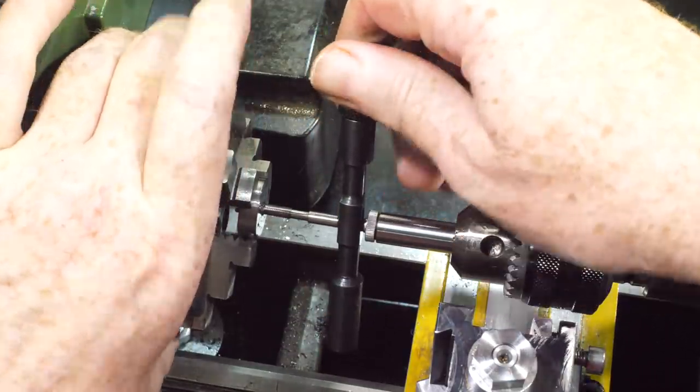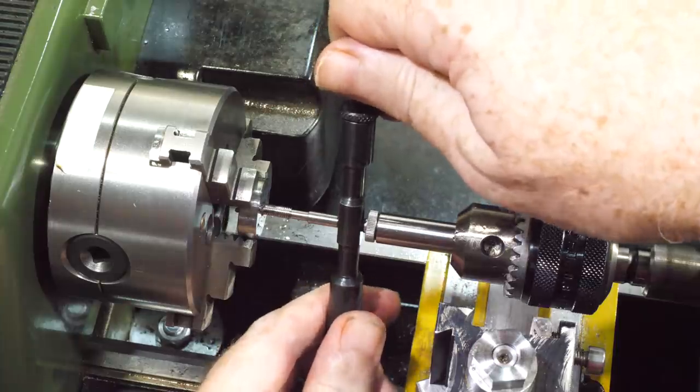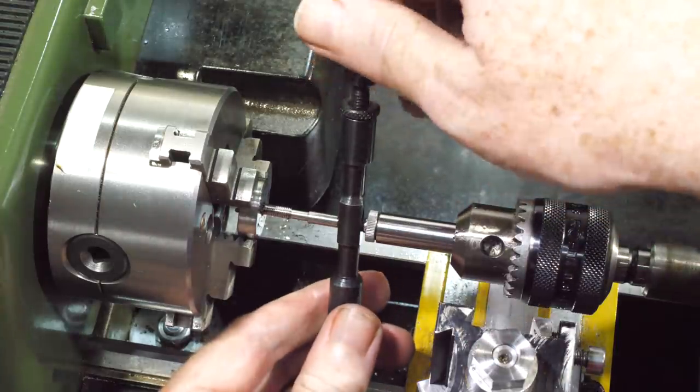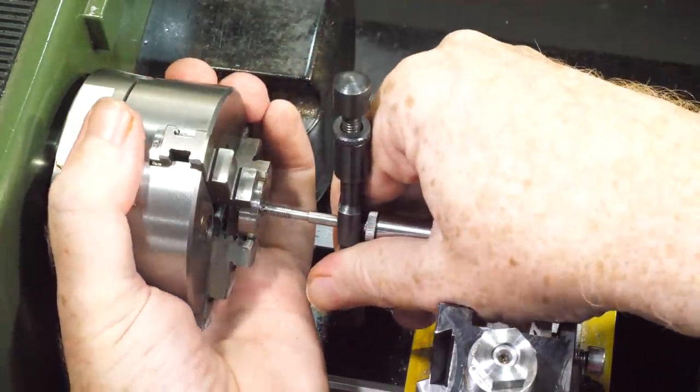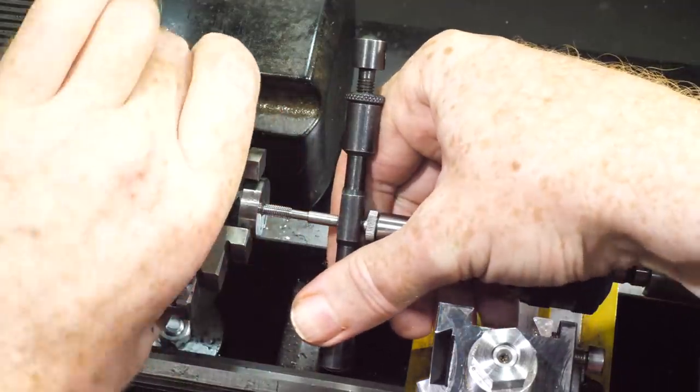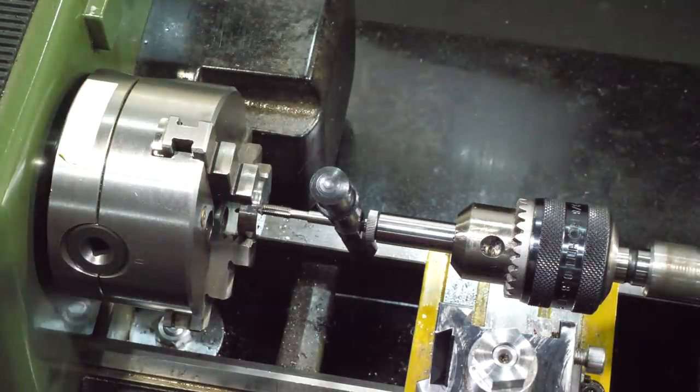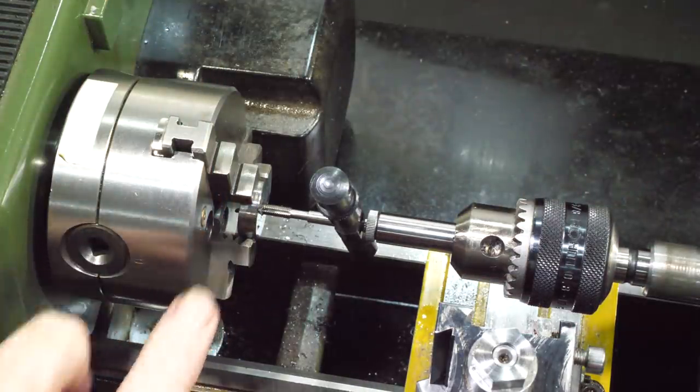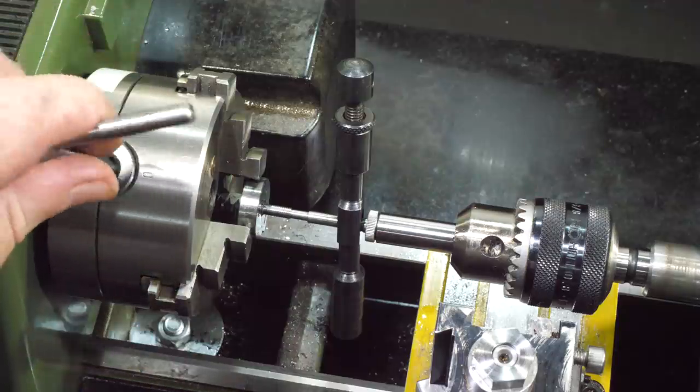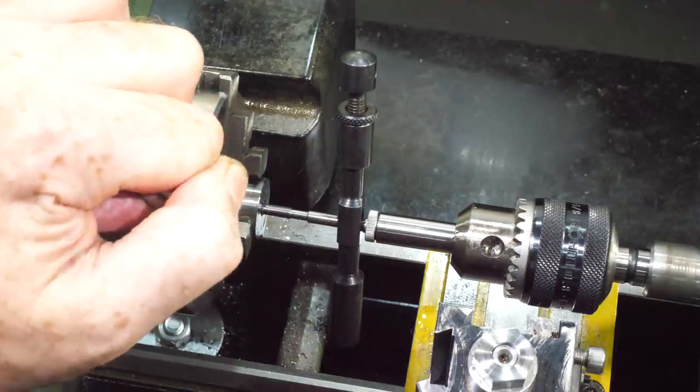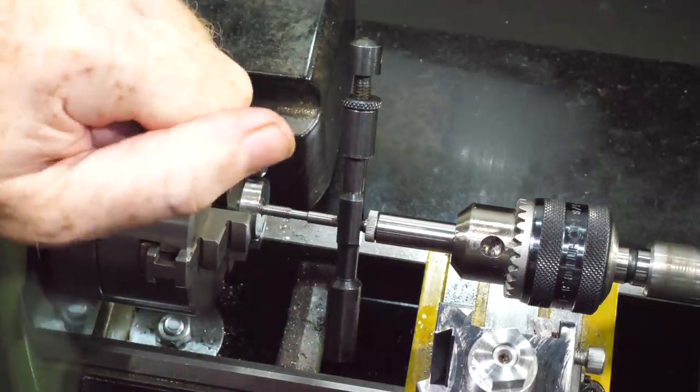The tap felt tighter as the thread progressed, and after a few turns I could feel something slipping. This turned out to be for two reasons. The first issue was that the shaft of the tap was soft and started to deform in the tap wrench. The second issue was the chuck wasn't quite tight enough and the parts started slipping.